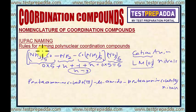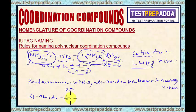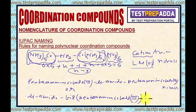If you look at this polynuclear complex, this part and this part are identical. So there is one more way of writing the name: we can use 'bis' instead of writing this twice. In that case, you write mu-amido first, then bis, and inside the bracket write pentaamminecobalt(III), bracket closed, and then outside write nitrate.